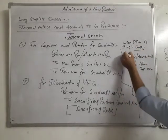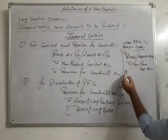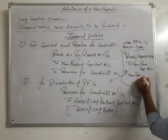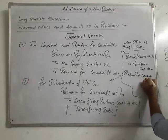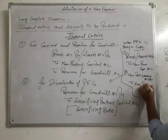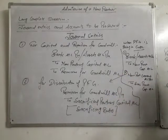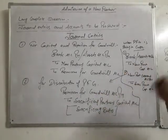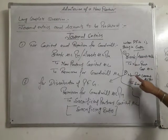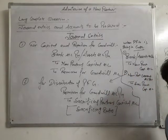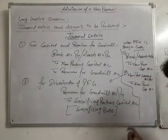When goodwill is not brought in cash, entry number 2 will use the current account. The new partner's current account will be debited, and the sacrificing partners will get the credit. The difference is: if goodwill is brought in cash, the premium for goodwill account opens and closes after the second entry at distribution time. If goodwill is not brought in cash, the premium for goodwill account does not close — instead, we debit the new partner's current account and credit the sacrificing partners. These are the two entries for goodwill.